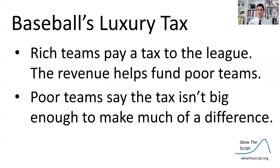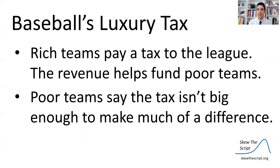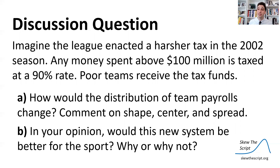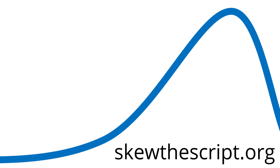Let's move to today's discussion question. Baseball has something called a luxury tax: rich teams pay a tax to the league and the revenue helps fund poor teams, though poor teams say it's not enough to make much difference. Imagine the league enacted a harsher tax in the 2002 season: any money spent above $100 million on payroll is taxed at a 90% rate, and poor teams receive those tax funds. A: How would the distribution of team payrolls change if this tax were in place? Comment on shape, center, and spread. B: In your opinion, how would this new system be better for the sport — or not? That's it for today's video, Statisticians. We'll see you next time. Bye!